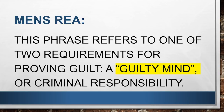The first word is mens rea, which basically means guilty mind. This phrase refers to one of the two requirements to prove somebody as guilty — a guilty mind or criminal responsibility. When you write any answer, whether it is CS executive or CS professional, any law paper, mens rea is very important. You can use it like: 'The director should have mens rea to be proven as guilty,' meaning he should have done it intentionally.